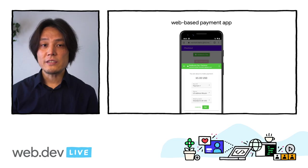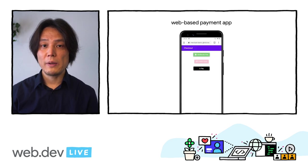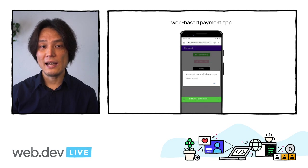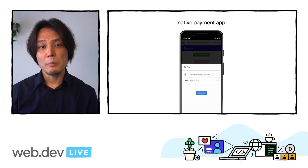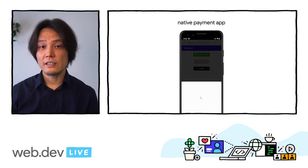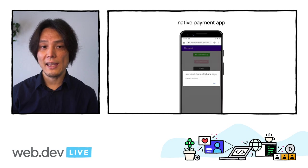There are two ways an existing payment app can integrate with Payment Request API. The best option for a payment app with an existing web-based flow is to implement the Payment Handler API by adding a service worker to their existing payment experience. A payment app that is primarily a native app can integrate with Chrome on Android using the pay intent.